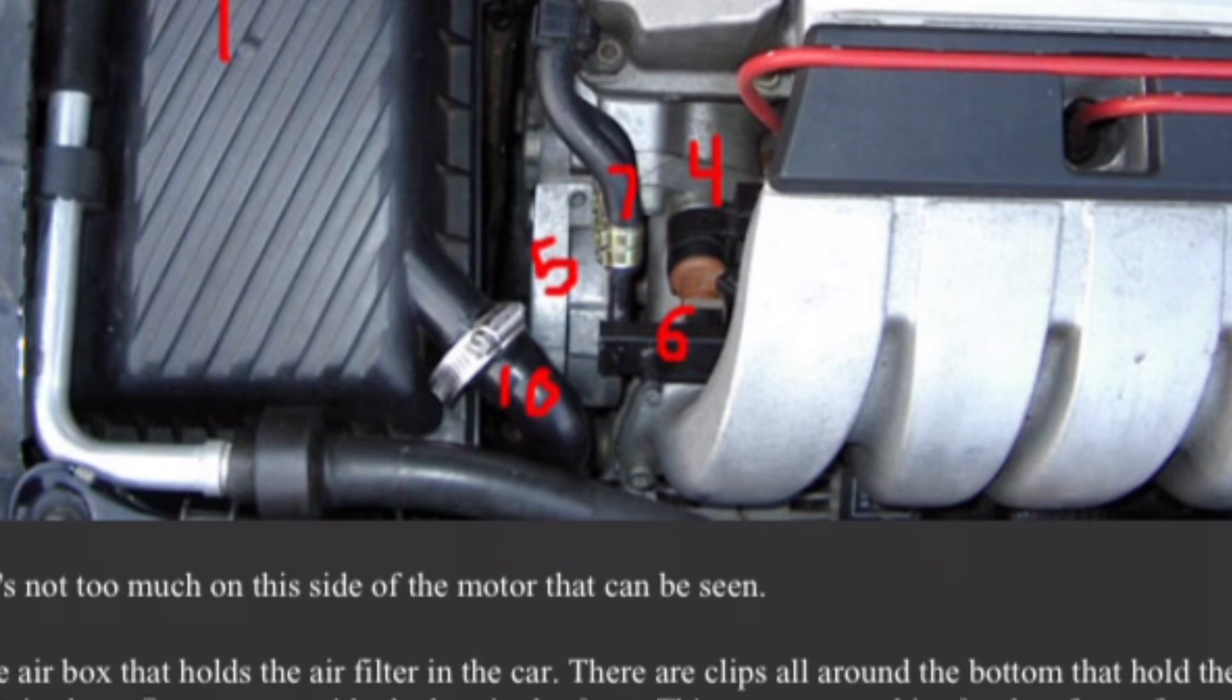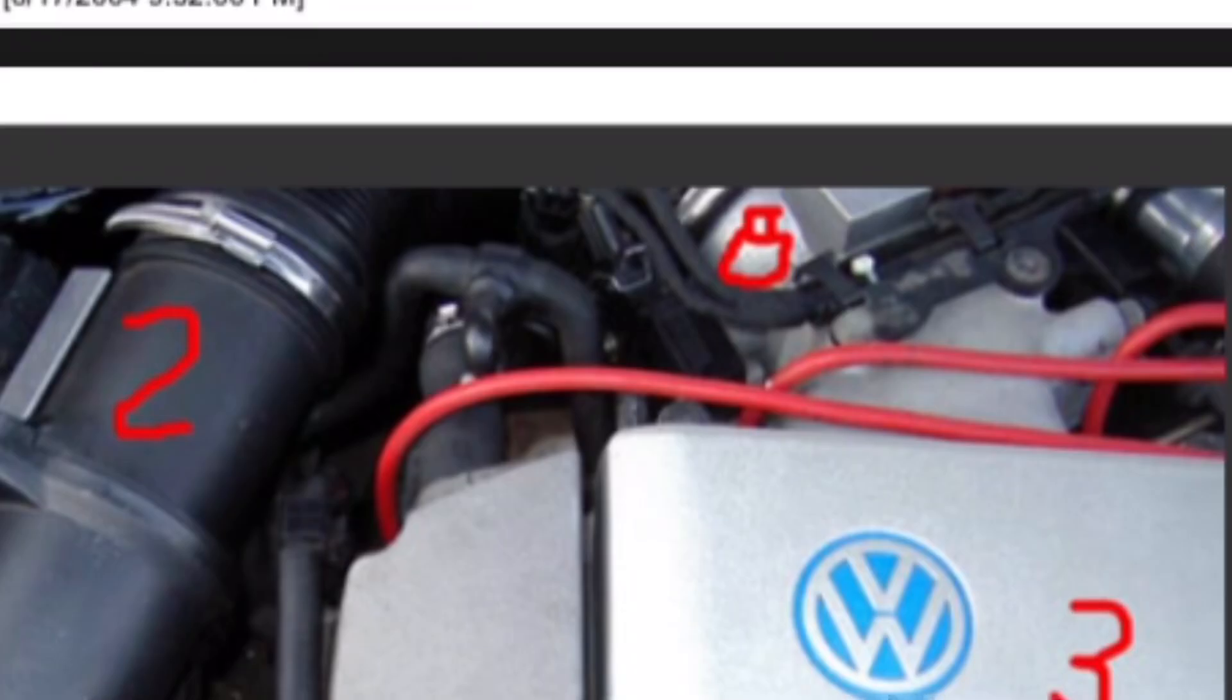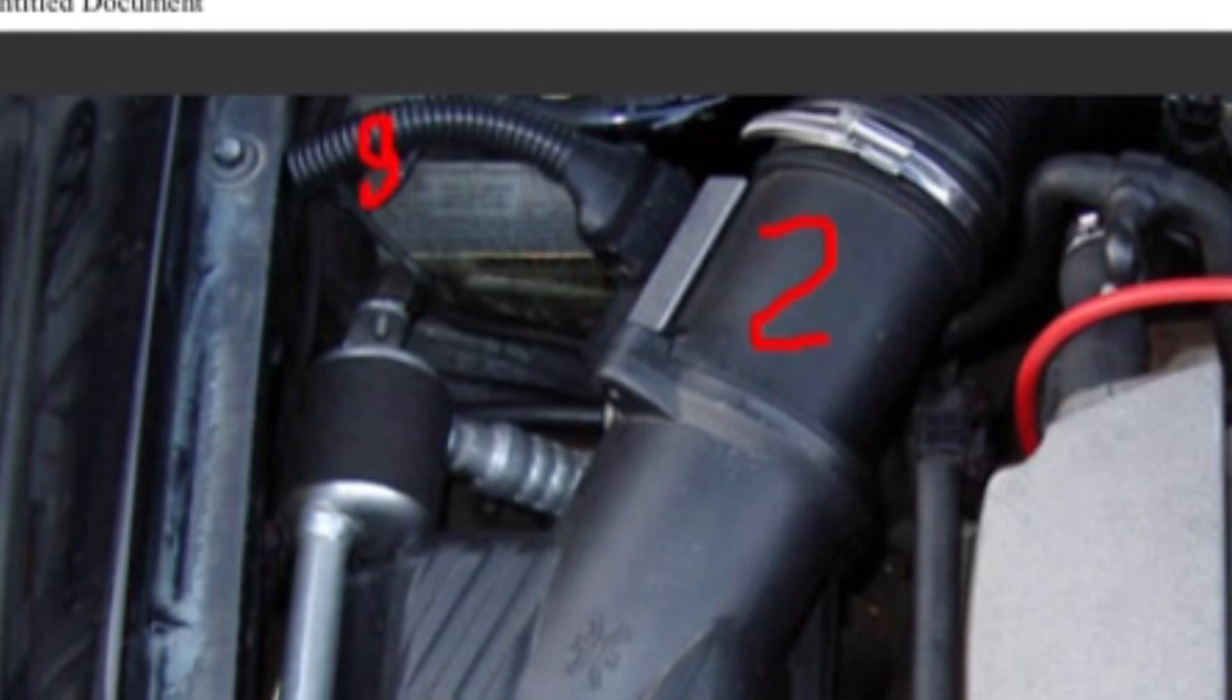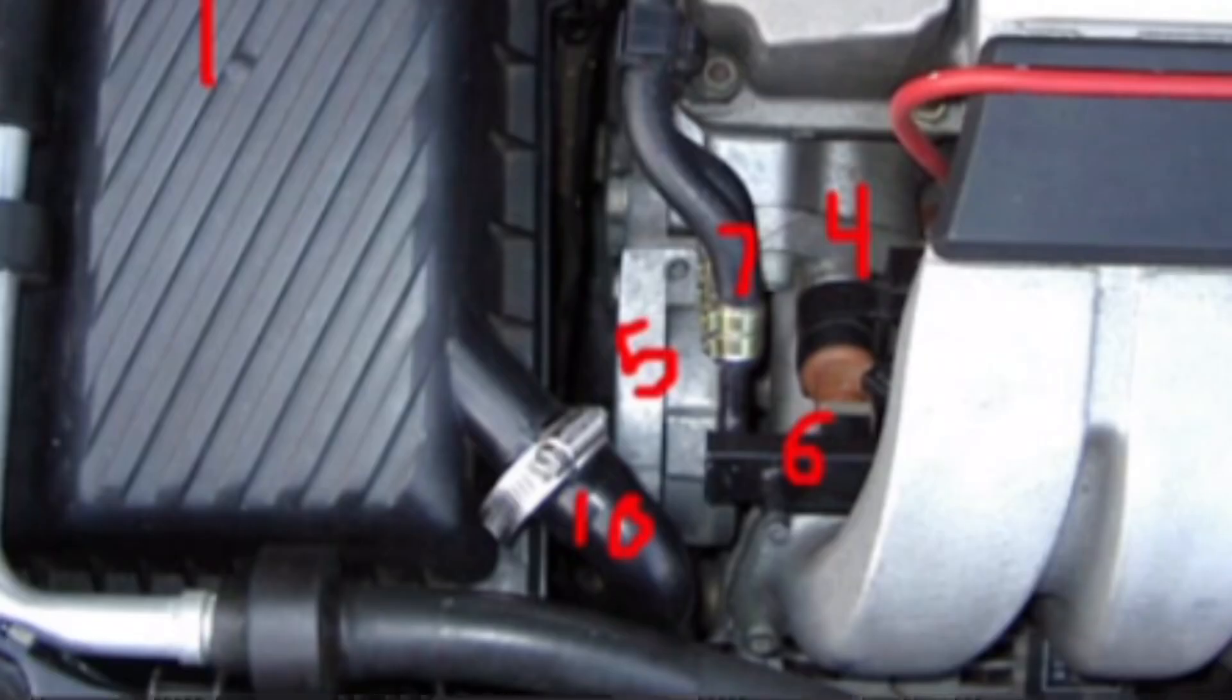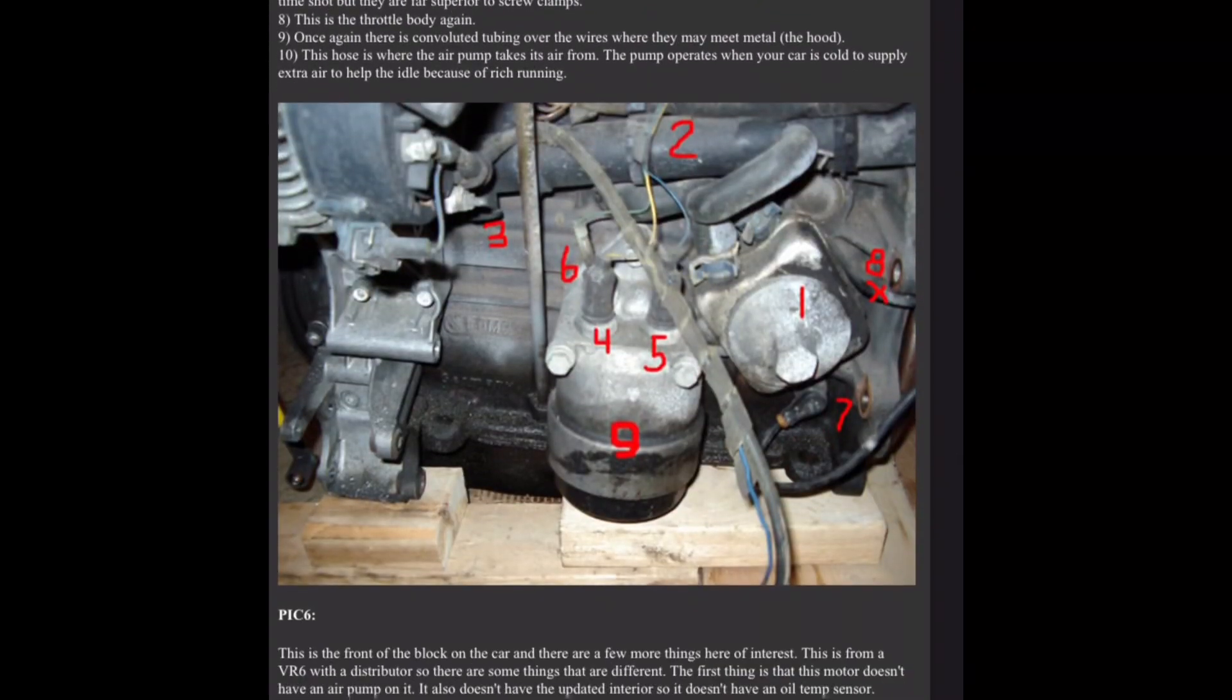Seven, this is the fuel feed and return line from the fuel rail. If you look closely, you will note each hose is double clamped as these have a bad habit of leaking. I also double clamped the connection at the frame rail under the MAF where the rubber fuel hose meets the hard line. These are crimp clamps. They are a one time shot but they are far superior to screw clamps. Eight, this is the throttle body again. Nine, once again there is convoluted tubing over the wires where they may meet metal. The hood. Ten, this hose is where the air pump takes its air from. The pump operates when your car is cold to supply extra air to help the idle because of rich running, pick six.